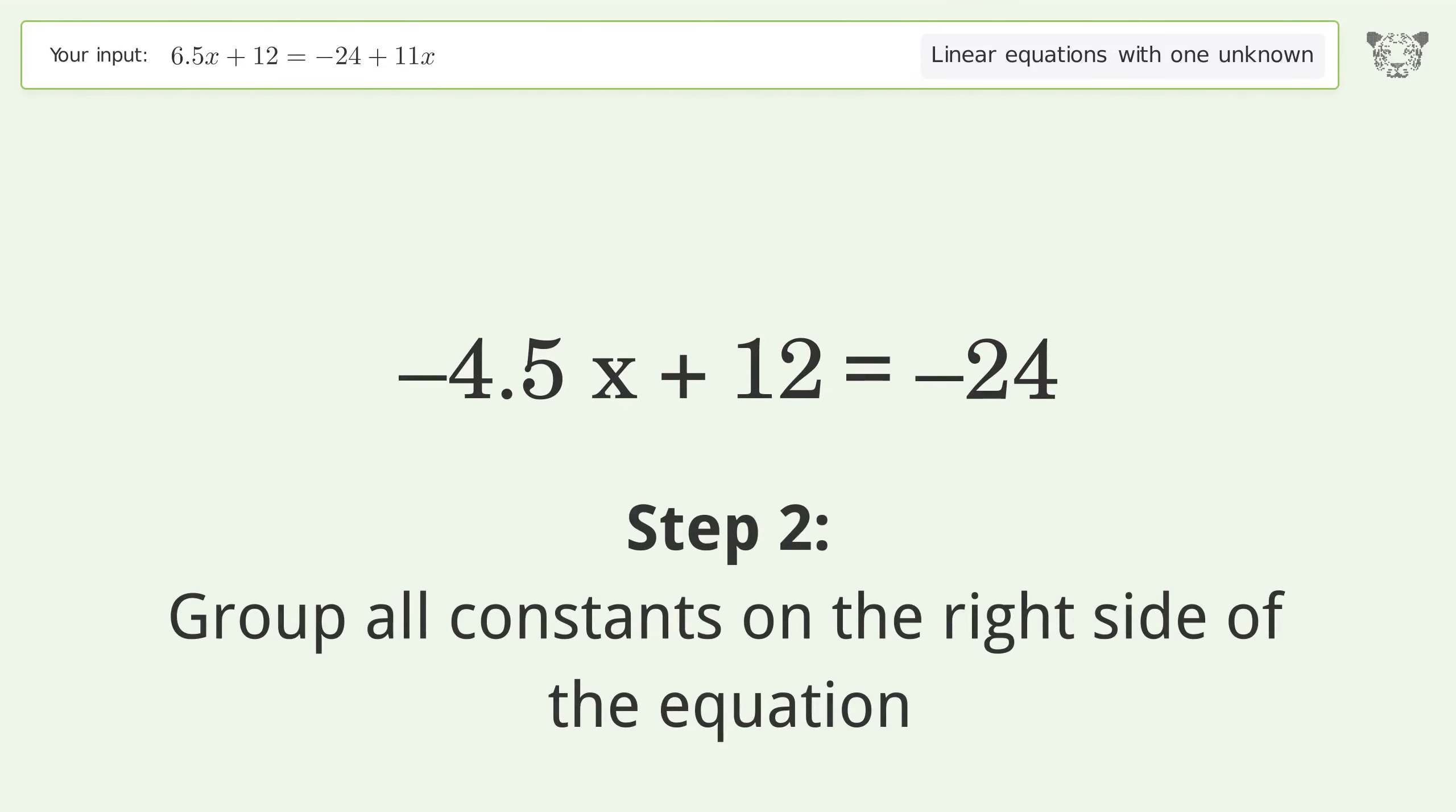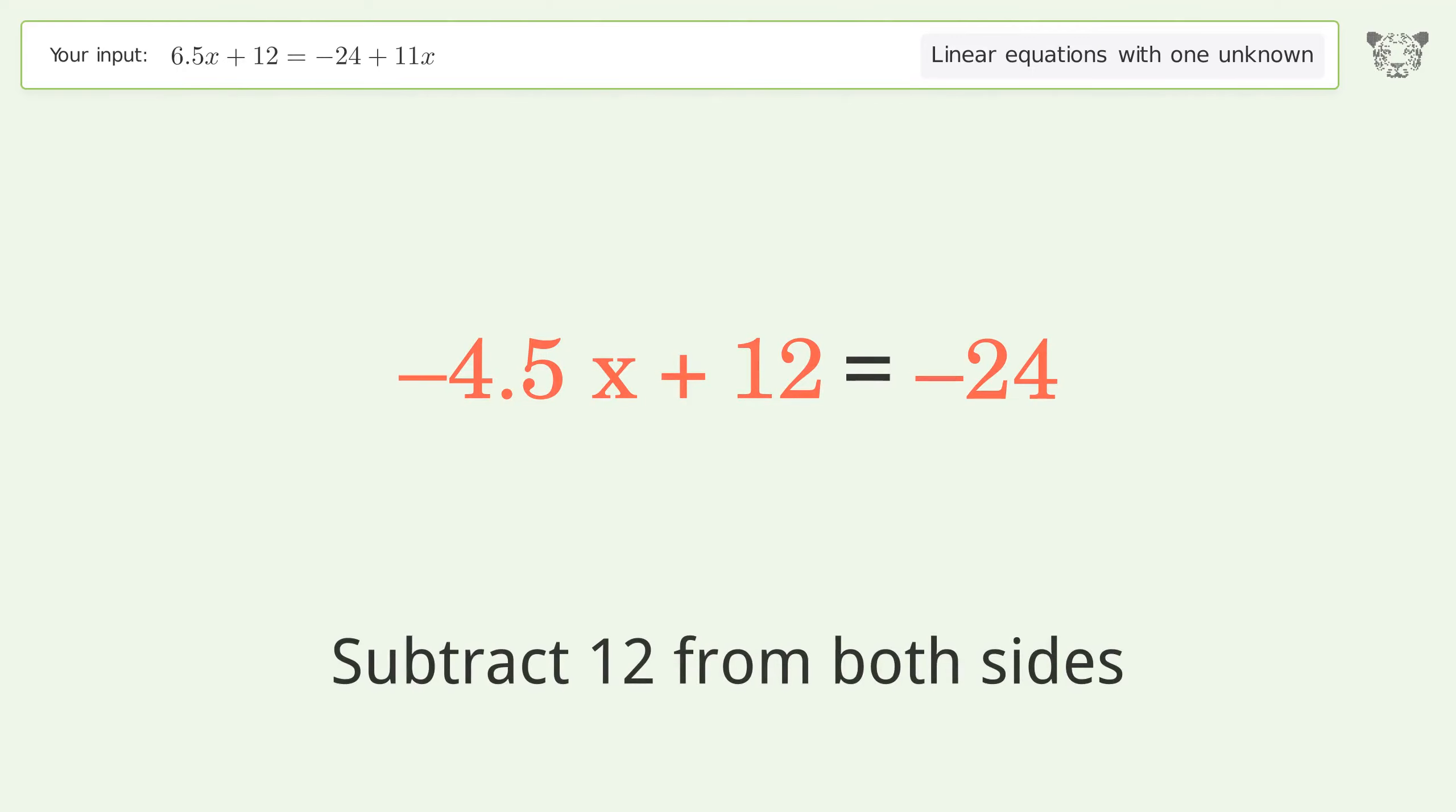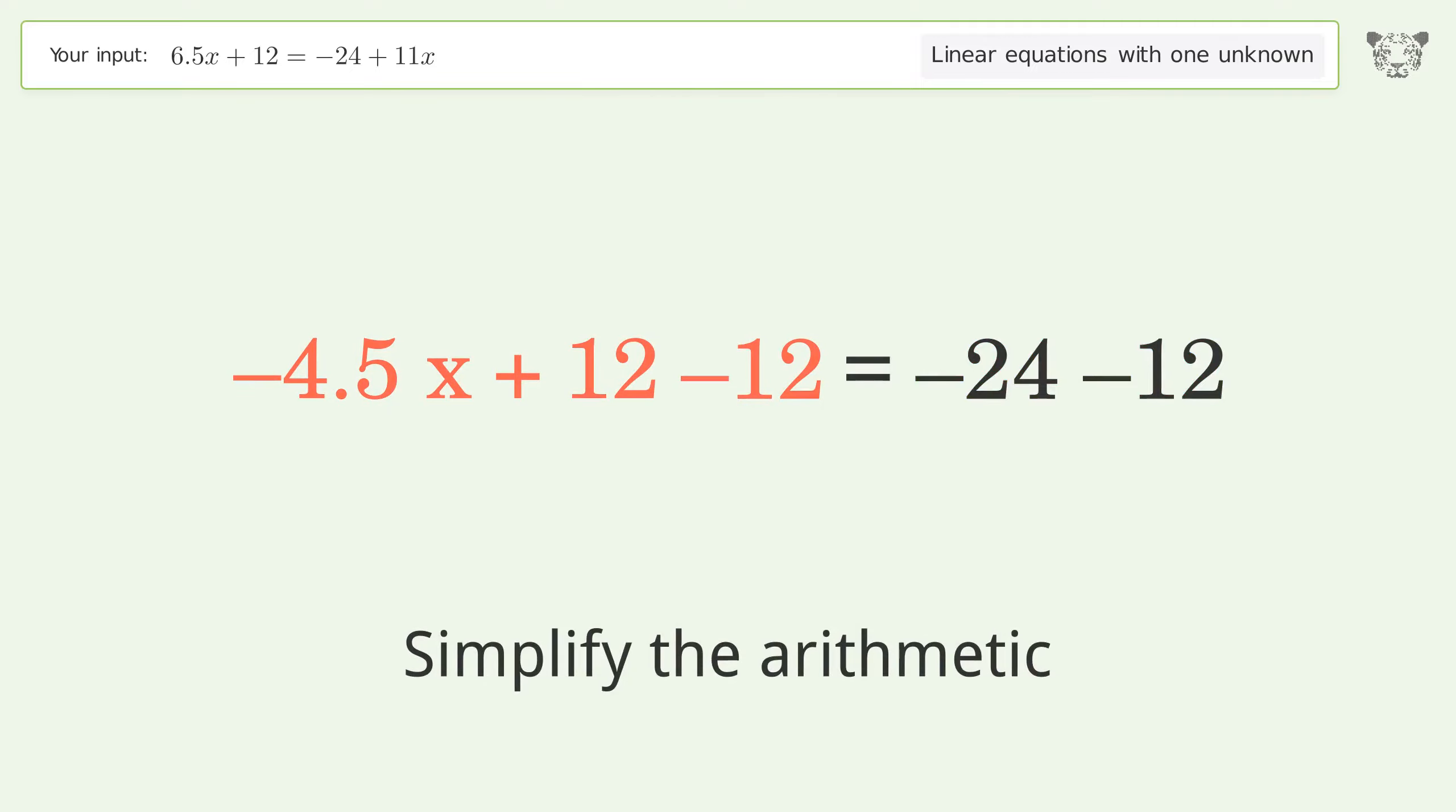Group all constants on the right side of the equation. Subtract 12 from both sides. Simplify the arithmetic.